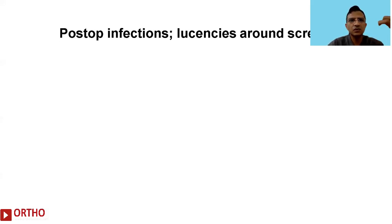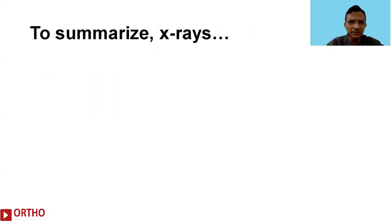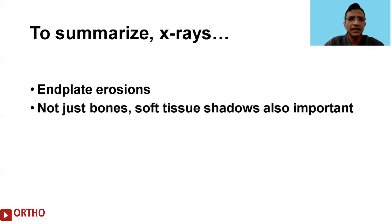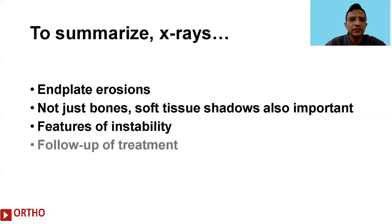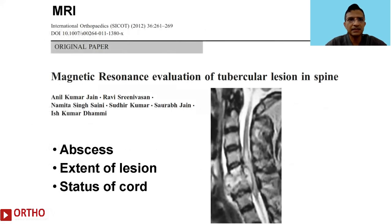Beyond de novo infections, we also look for signs of infection in post-operative cases. In these situations we may need to look for subtle indicators such as lucencies around the screws as seen here. To summarize: x-rays are the most basic investigation; one can look for end plate erosions and not just bones but also soft tissue shadows. We look for features of instability, and x-rays are very important for follow-up and detecting post-operative infection.